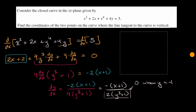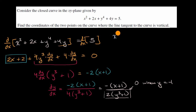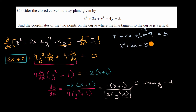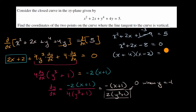If we substitute y equals negative one into the original equation, we get x squared plus two x plus one plus one minus four is equal to five, which simplifies to x squared plus two x minus eight equals zero. Factoring gives x plus four times x minus two equals zero. So x equals negative four or x equals positive two when y equals negative one.